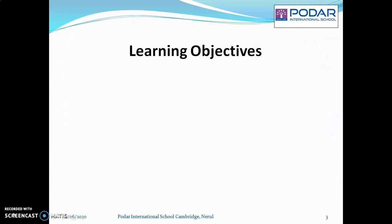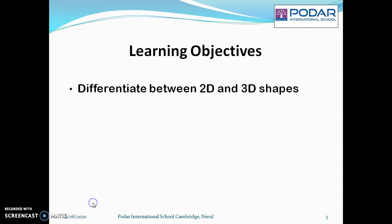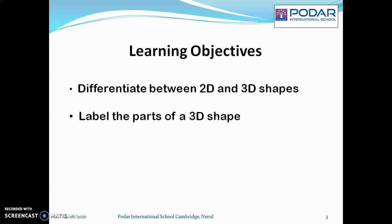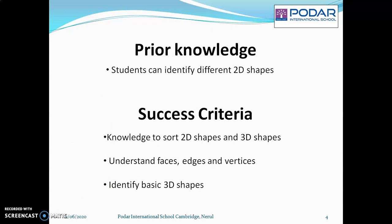Before we start, let's understand the learning objectives. Students will be able to differentiate between 2D and 3D shapes. Students will be able to label the parts of the 3D shapes and identify basic 3D shapes. What prior knowledge do you have? You already have learnt about different 2D shapes. Success criteria would be: after watching this lesson, you would have the knowledge to sort 2D shapes and 3D shapes, understand what are faces, edges and vertices of a 3D shape, and identify basic 3D shapes.